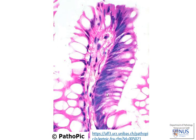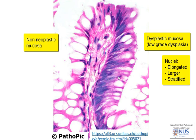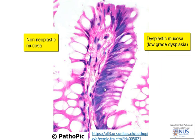Moving on to a very high power view, this is a single villous. On the left side we can see normal colonic mucosa with goblet cells and very small basal nuclei. There is an abrupt transition, and on this side the nuclei are a lot taller - elongated and oval - and they are stratified, located in the middle part of the length of the cell or approaching the luminal surface. This nuclear stratification represents low-grade dysplasia. In high-grade dysplasia, the NC ratios are even higher and the nuclei appear more rounded with prominent nucleoli.